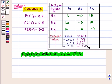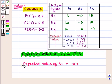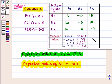So expected value of act A2 is equal to minus 2.1. Now expected value of act A3 will be equal to 15 into 0.2 plus 10 into 0.5 plus minus 9 into 0.3, and on solving this we get 5.3.